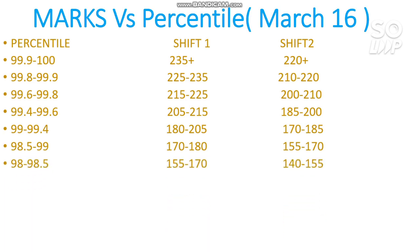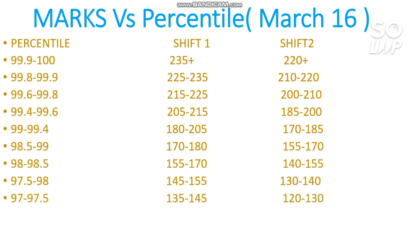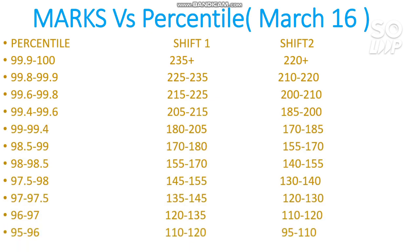For 98 to 98.5 percentile you need to score 145 to 155 for Shift 1 and 130 to 140 for Shift 2. For 97 to 97.5 percentile you need to score 135 to 145 for Shift 1 and 120 to 130 for Shift 2. For 96 to 97 percentile you need to score 120 to 135 for Shift 1 and 110 to 120 for Shift 2.